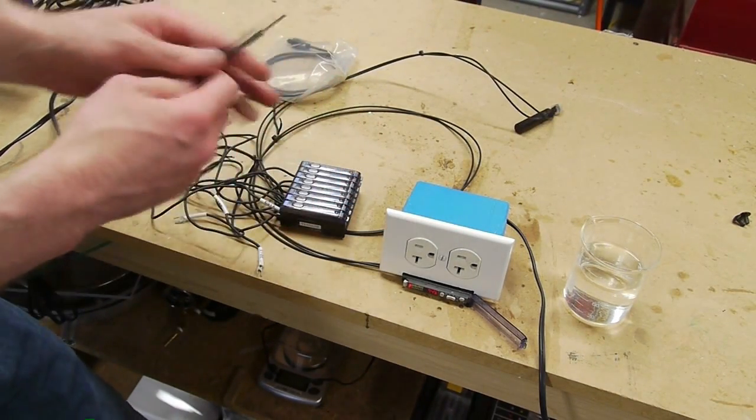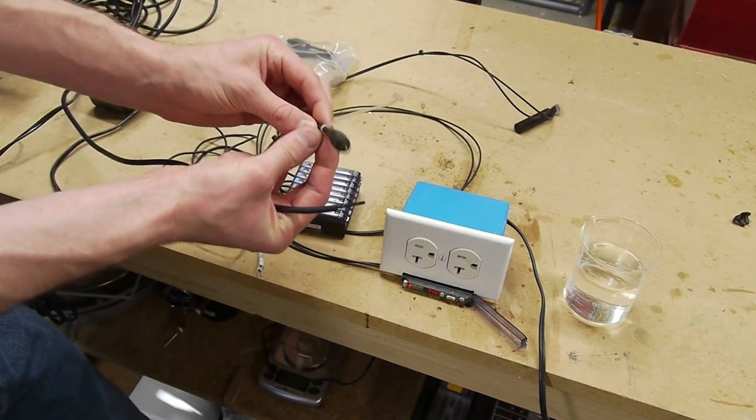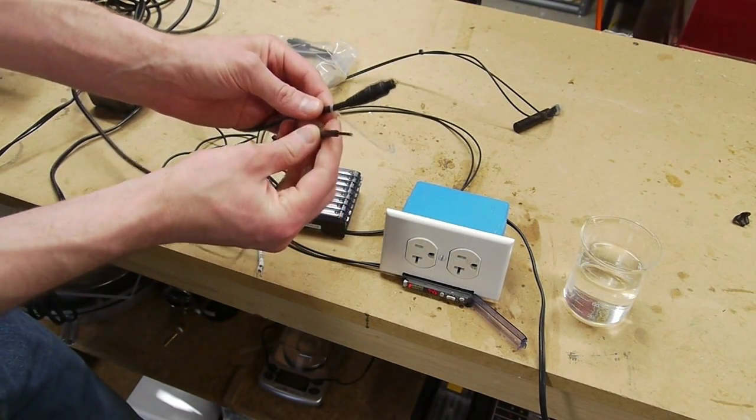And for the money, I mean, you really can't beat it. This is what the Toslink end looks like. And if you just chop that off, that's what you've got inside.